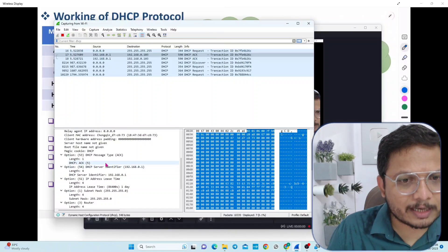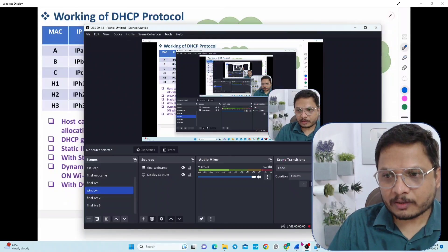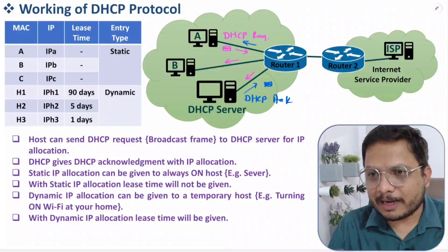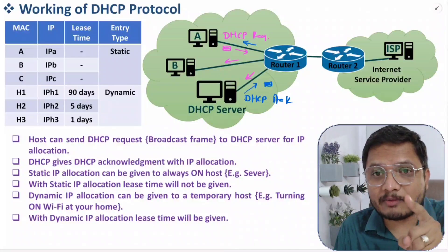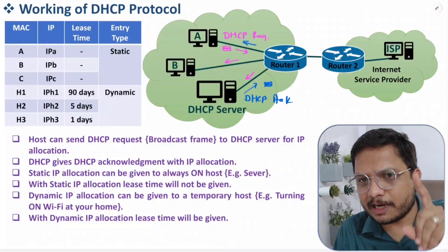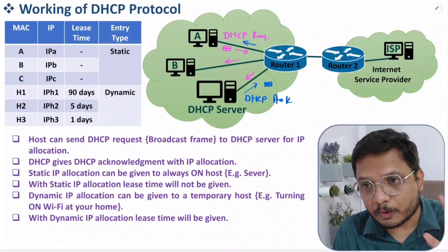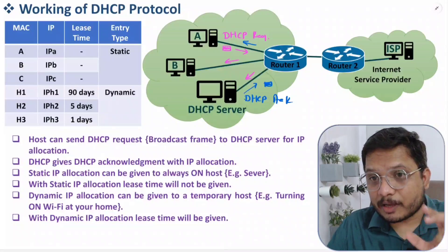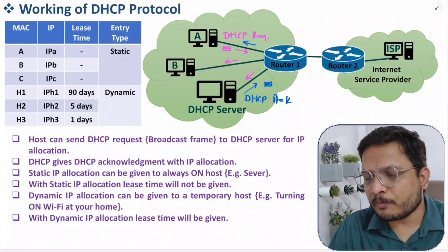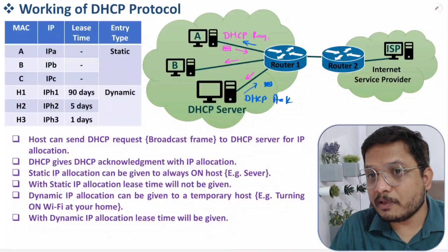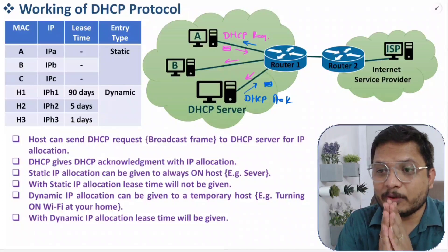So these are the informations provided to me, and now I think you have a fair enough idea of how exactly this protocol is functioning. Whenever you want to access the internet, you should be having an IP, and that IP assignment happens with DHCP protocol. There can be two types of IP assignment: one is static and the second is dynamic. Dynamic IP assignment will have a lease time that explains for how long this IP is assigned to you. The DHCP request frame forwarded by the host will be broadcasted in the entire network. If you have anything you would like to share, please note it down in the comment section — I'll be happy to help you. Thank you so much for watching this video.